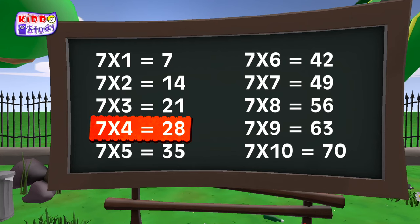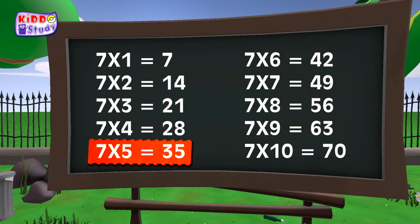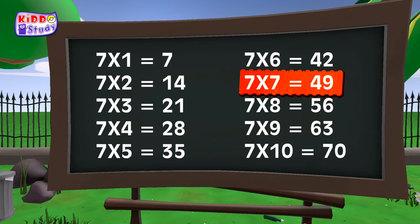7 fours are 28. 7 fives are 35. 7 sixes are 42.